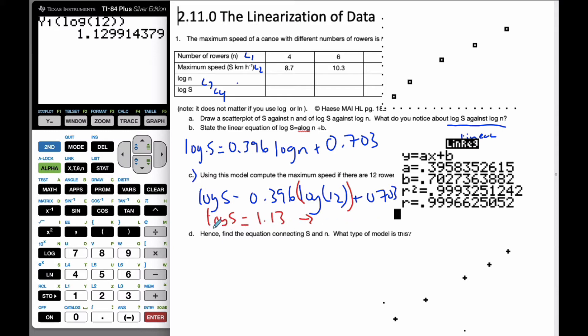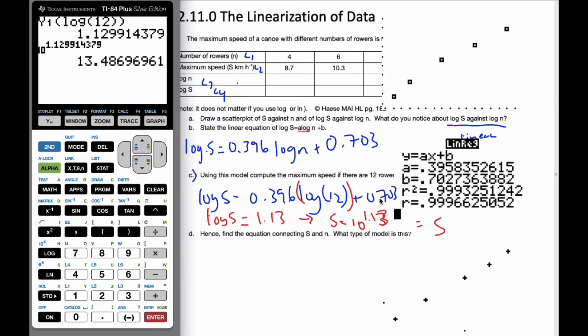So then I have to convert that to S. In order to solve this, I raise it to the power of 10. So S is going to be 10 to the 1.13. And so S will be, if I take this value to the power of 10, take all my decimals so I can get this. And so, I know that the speed is going to be 13.5 kilometers per hour is the predicted maximum speed if I have 12 rowers.